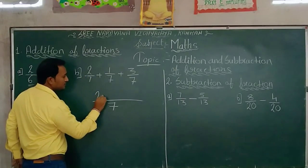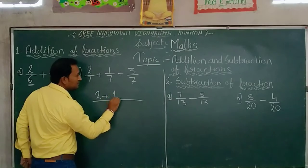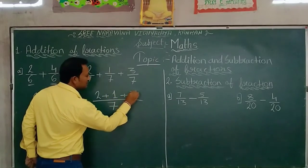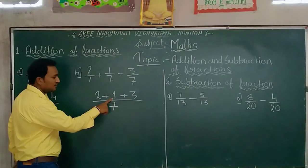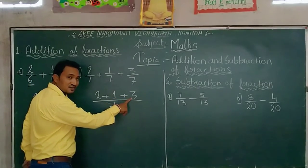2 plus 1 plus 3. 2 plus 1 is 3 and 3 plus 3 is 6.